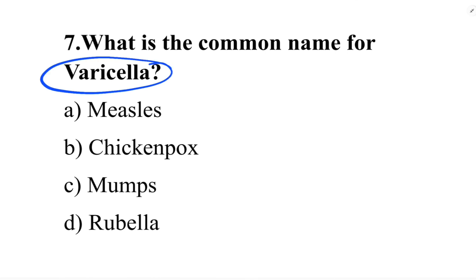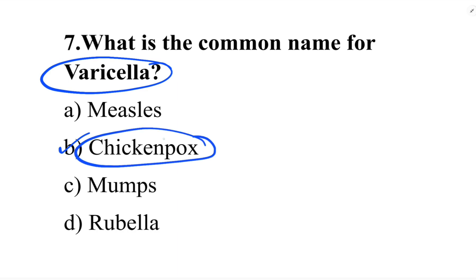Next question: what is the common name for varicella? Option A: measles. Option B: chicken pox. Option C: mumps. Option D: rubella. The correct answer is option B, chicken pox. Chicken pox is also called varicella.